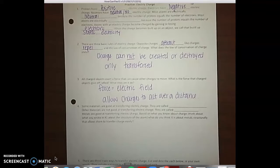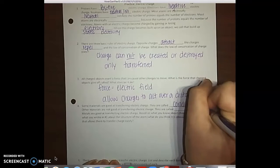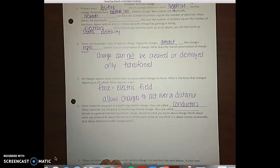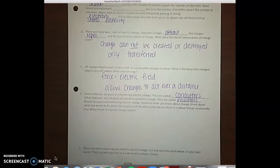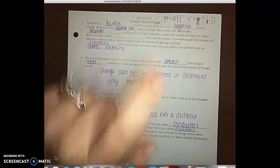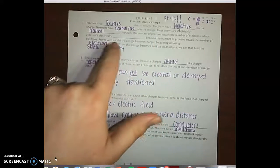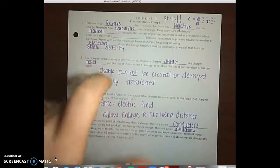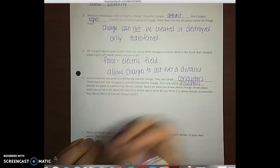Number four says some materials are good at transferring electric charge. They are called conductors. Other materials are not good at transferring electric charge. They are called insulators. Metals are good at transferring electric charge. Think about what you wrote in number one about the structure of an atom. What do you think it is about metal structurally that allowed them to transfer charge easily? We learned that protons are positive charges, electrons are negative and neutrons are neutral, but we learned that the charge is based off transferring electrons. So metals hold on to their electrons very loosely which allows them to be transferred very easily.